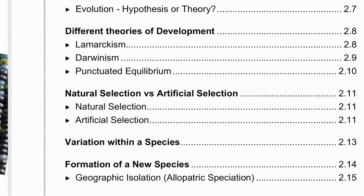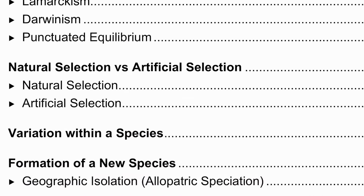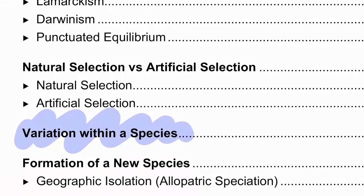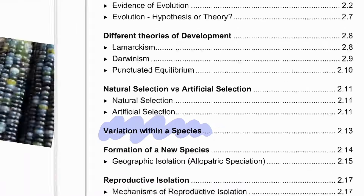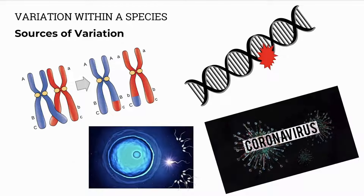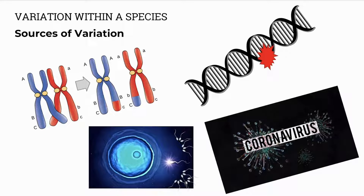Then we'll have a look at variation within a species — sources of variation and types of variation. You covered this earlier in the year. For example, crossing over in meiosis introduces variation. Mutations in DNA introduce variation. Random fertilization — which sperm gets to which egg — also introduces variation.